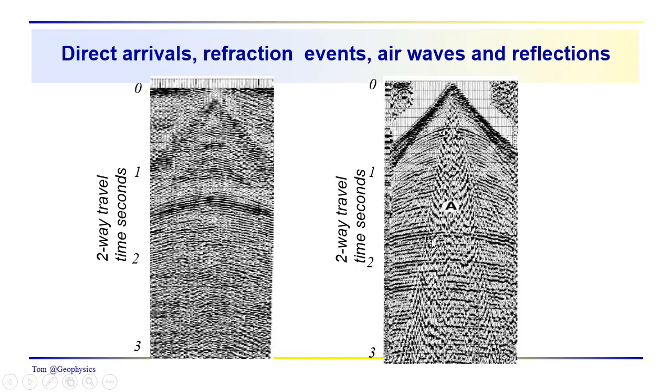And we'll talk about the mathematical relationships using ray trace theory in subsequent videos. Now these events here would be your ground rule. Most likely would be a Rayleigh wave, probably an up and down retrograde elliptical wave.